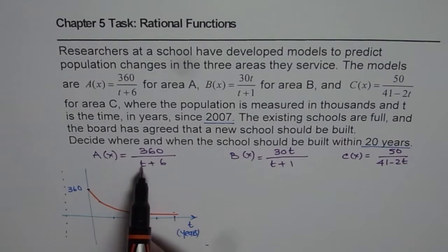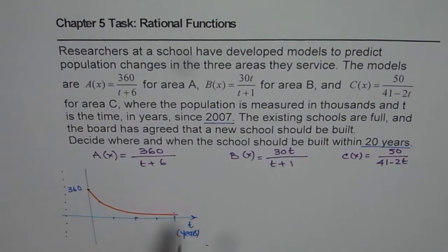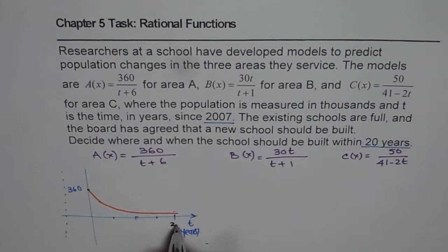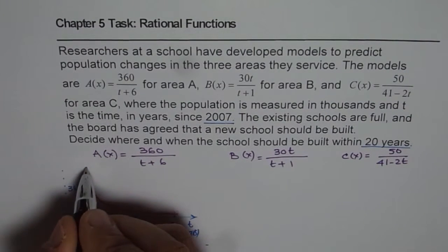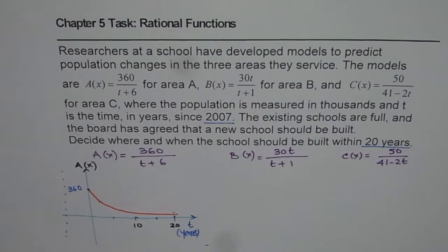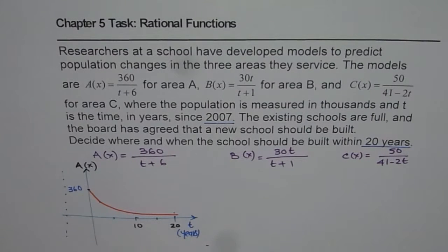And of course, as t increases very large, it will approach 0. So that is how the graph is going to look like for 20 years. So we have approximate idea, and this is for our function A(x). So the school in area A, the number of students is going to decrease, actually. It is saturated at present, but further it is going to decrease.